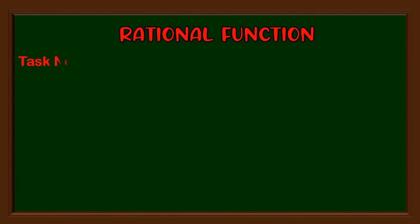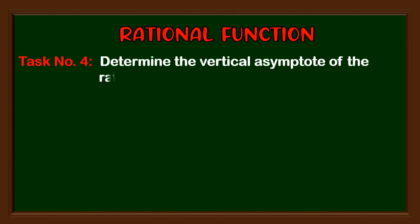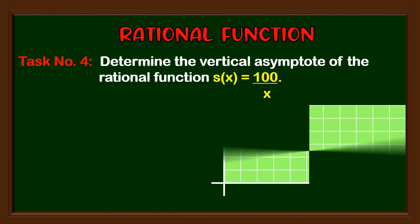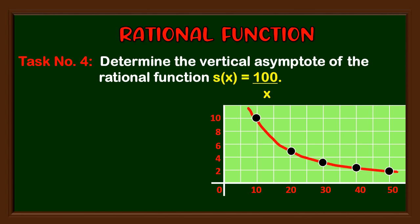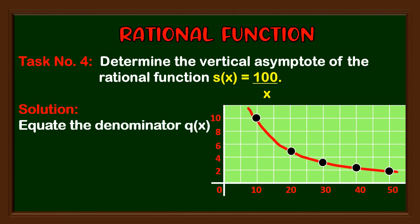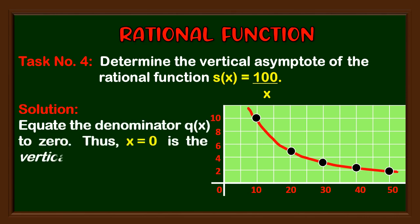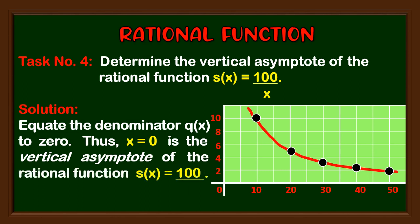Task number four: determine the vertical asymptote of the rational function s(x) = 100 / x. For the solution, equate the denominator q(x) to zero. Thus, x = 0 is the vertical asymptote of the rational function s(x) = 100 / x.